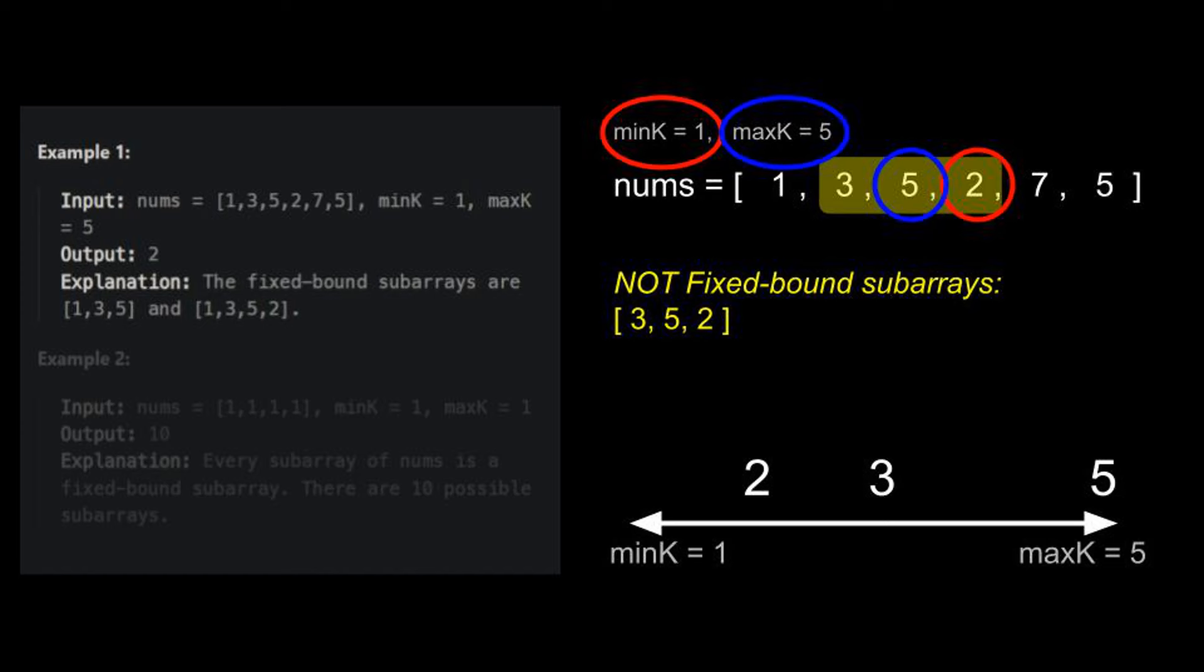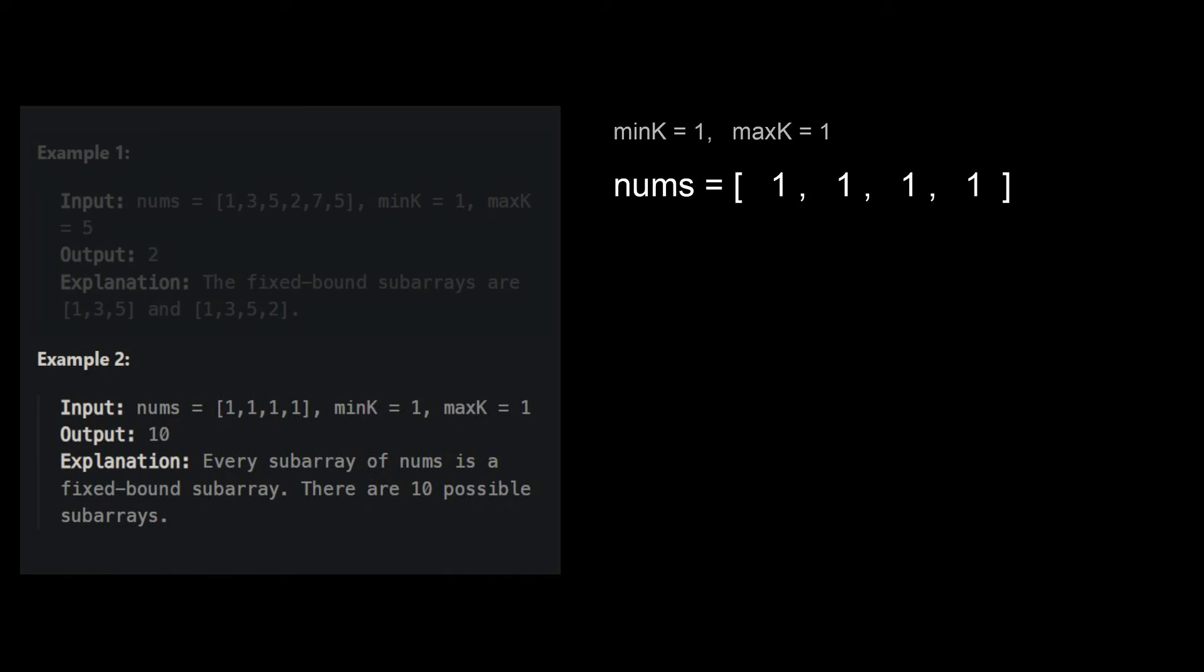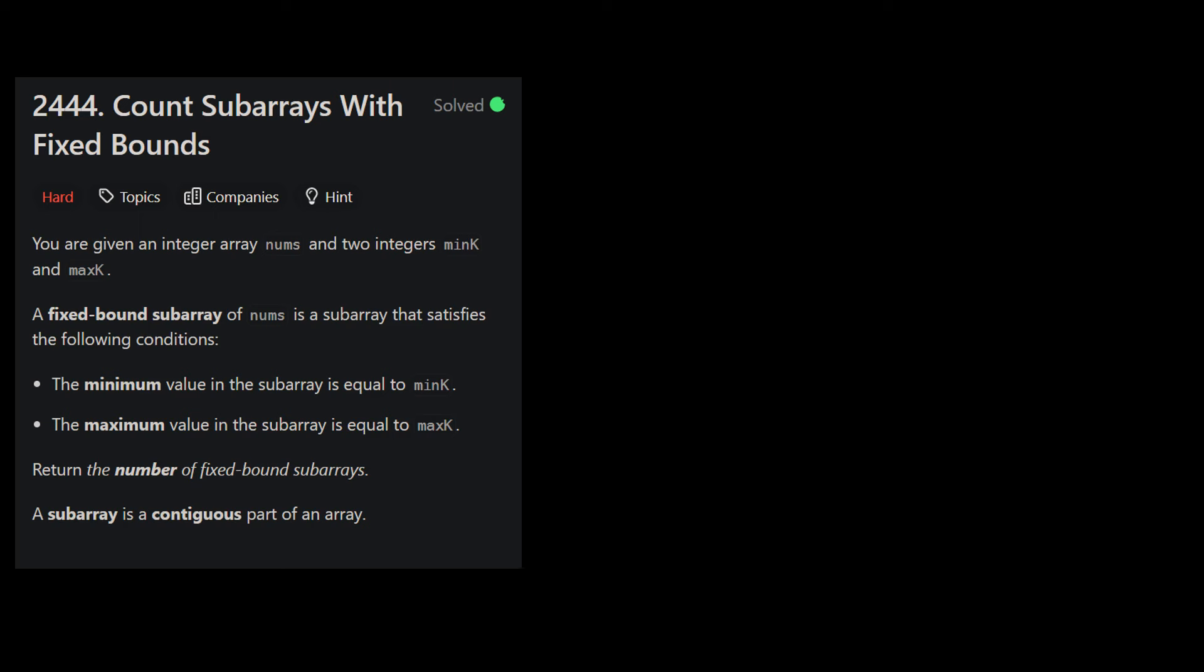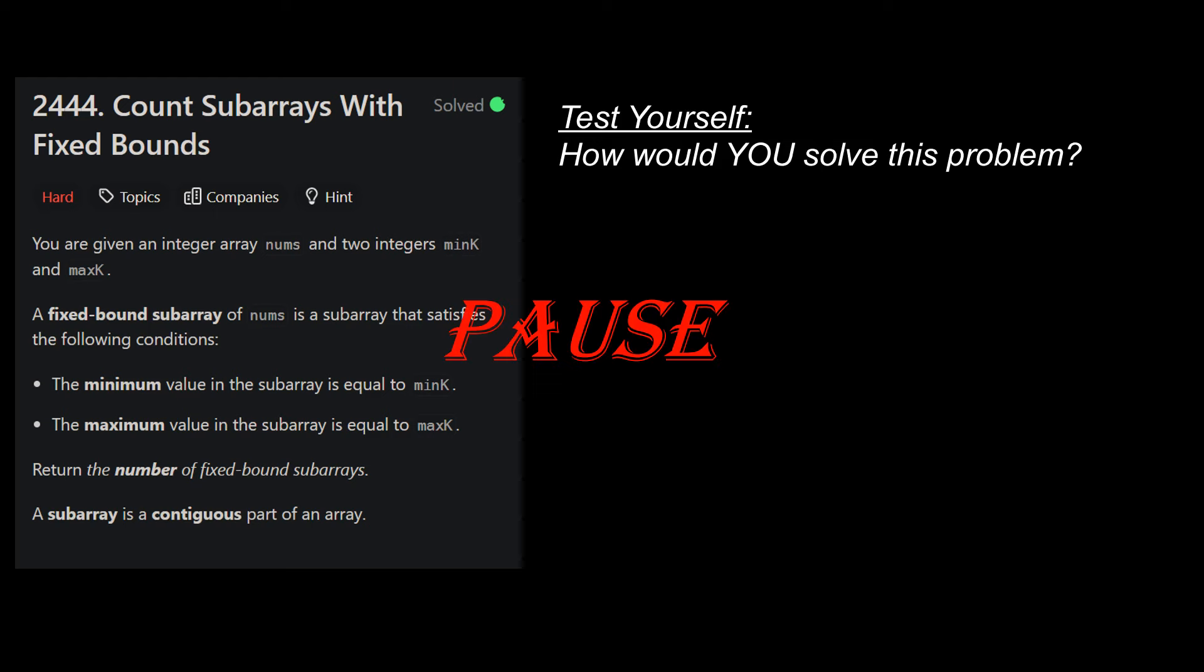So the numbers in the fixed bound subarray do not only have to be between min k and max k. Its minimum has to be exactly min k, and its maximum has to be exactly max k. In example 2, min k and max k are both 1, and nums is just a sequence of 1. This is a sort of degenerate case where every single subarray is actually a valid fixed bound subarray. Now that you've understood the problem, I want you to think about how you would solve the problem. So pause the video right here, take out a piece of pen and paper, and start doodling a little bit. Try and think what your strategy is going to be.